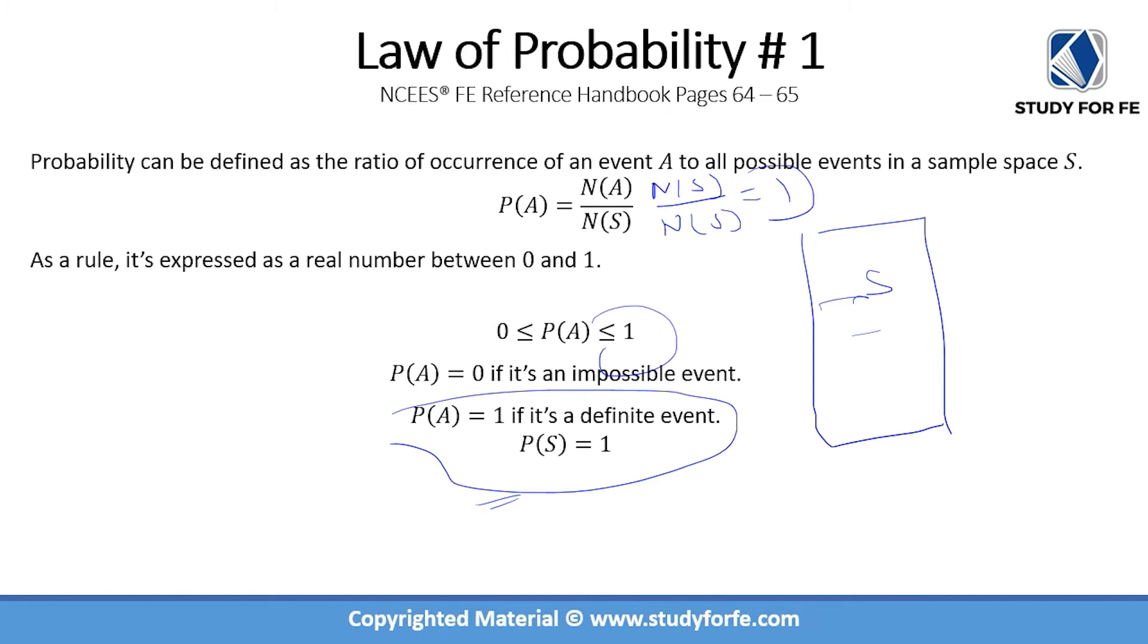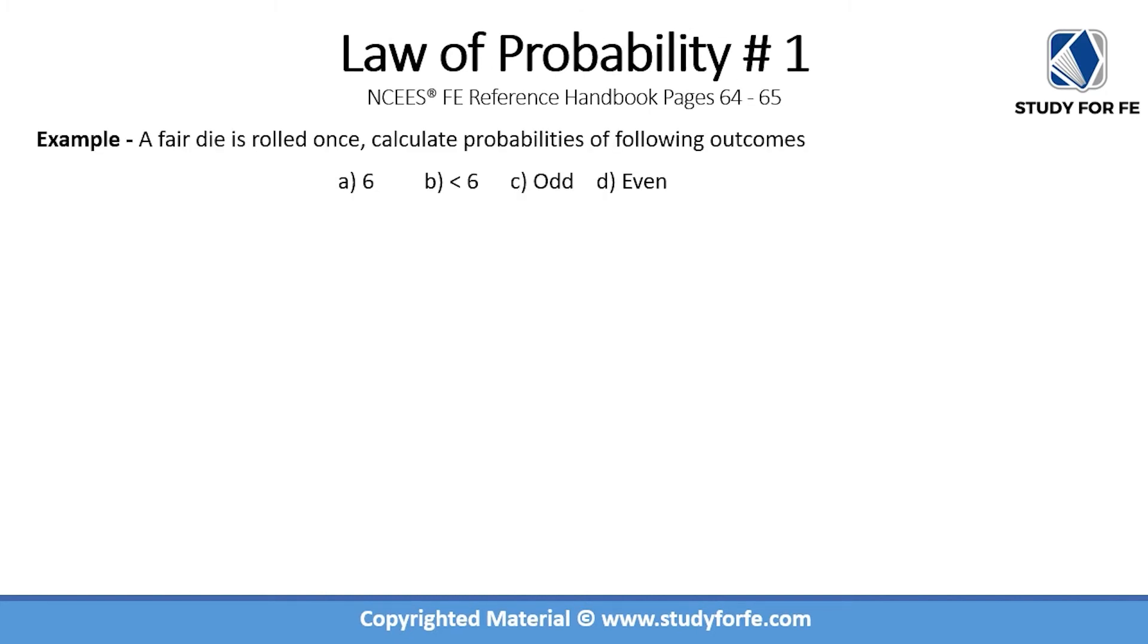Let us now take a look at an example in order to better understand this Law of Probability Number One. We have a scenario where a fair die is rolled once and we are being asked to calculate the probabilities of these events. Now a die, for those of you who don't know, is basically a cube that a lot of board games use. There are six sides of this cube: up, down, left, right, front, and back, and on each of these sides you have dots. So we are being asked to find the probabilities of these outcomes: that you end up with a six, or you end up with numbers less than six, you end up with an odd number, or an even number.